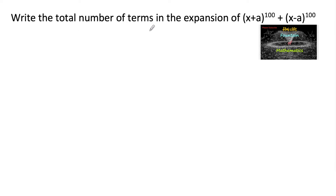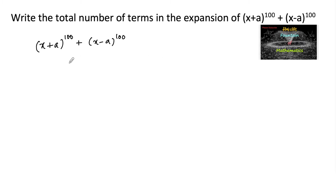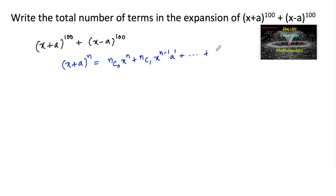Write the total number of terms in the expansion of (x + a)^100 + (x - a)^100. We know that the expansion of (x + a)^n is: nc0 x^n + nc1 x^(n-1) a^1 + ... + ncn a^n.